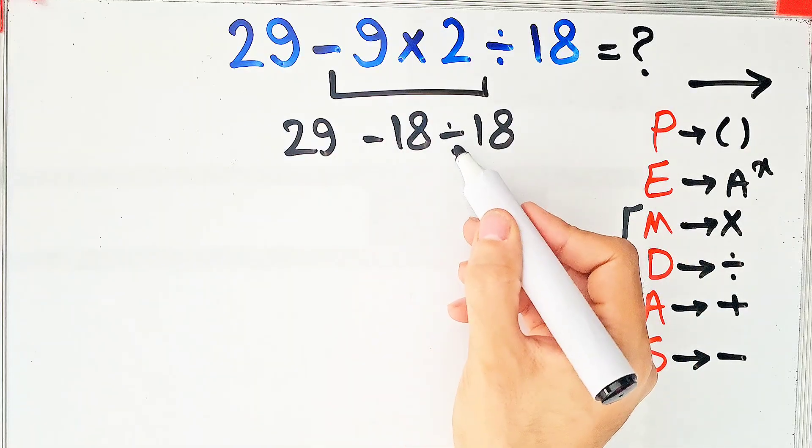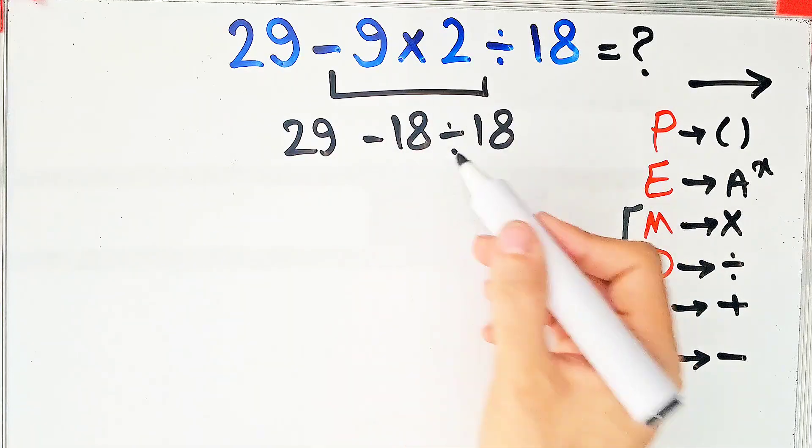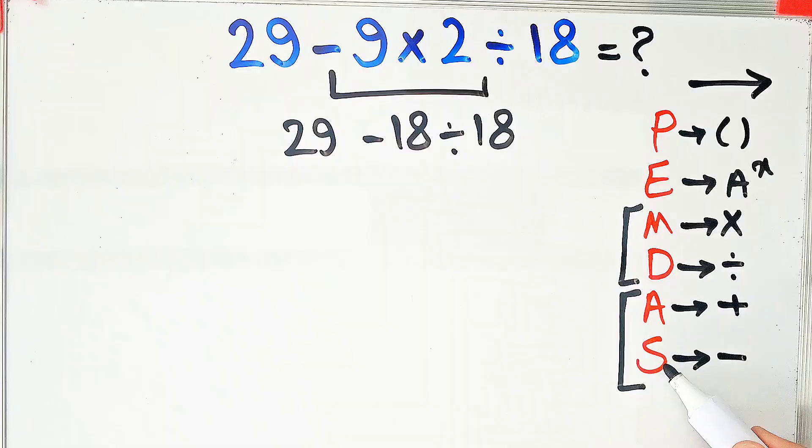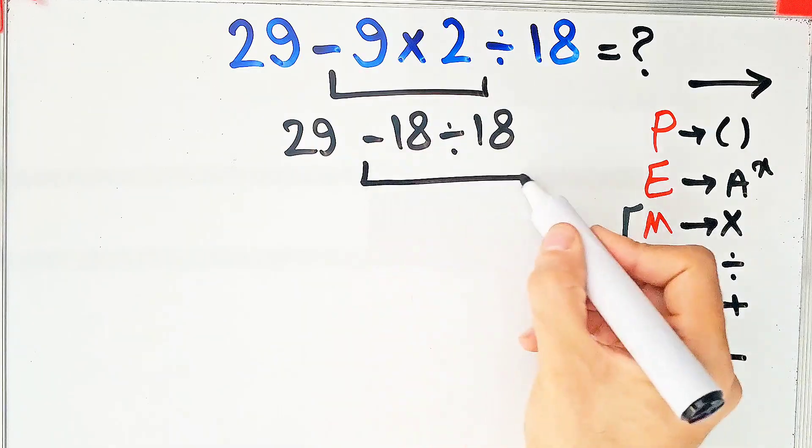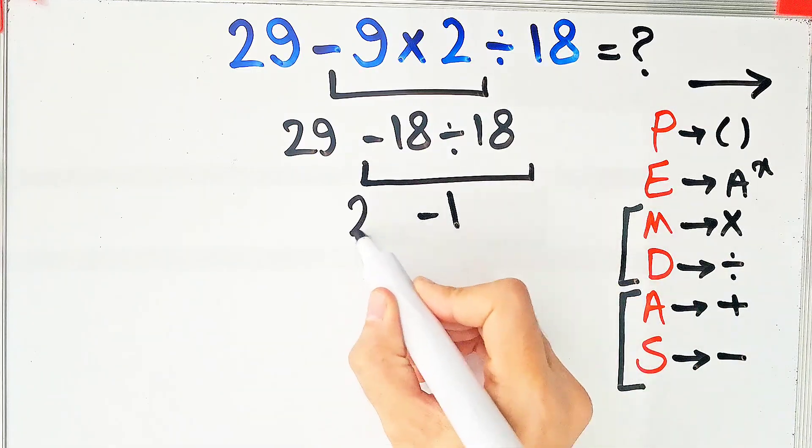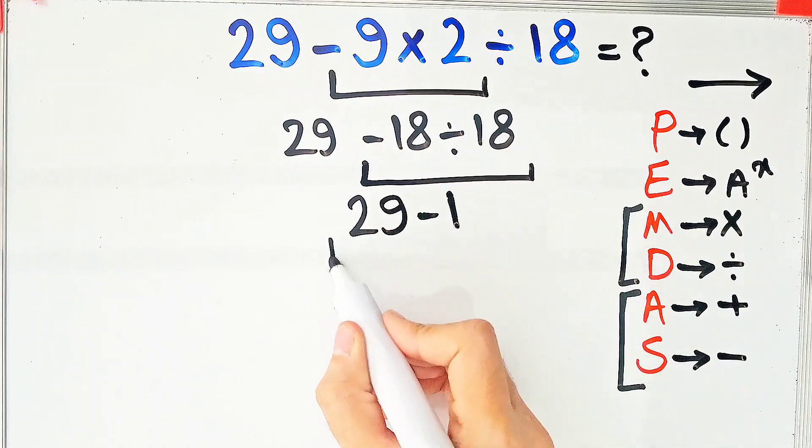In this step we do this division because the division has higher priority than subtraction. Negative 18 divided by 18 equals negative 1. And 29 minus 1 equals 28.